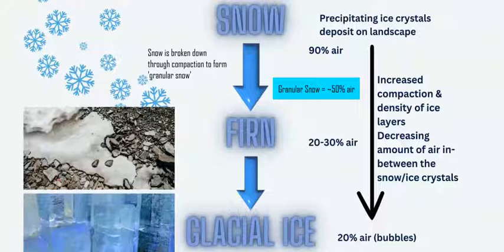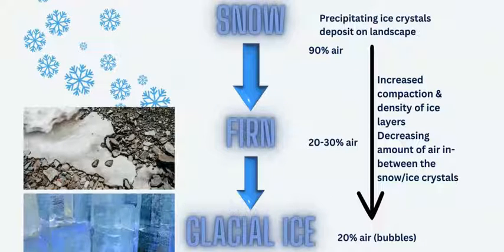After recrystallization, going from about half air and half snow, it turns into a snow type called firn — spelled F-I-R-N — which is snow that's been around for about one to two years. Firn is again smaller, more compact, and denser, found deeper down in the glacier, and it is between 20 to 30% air.